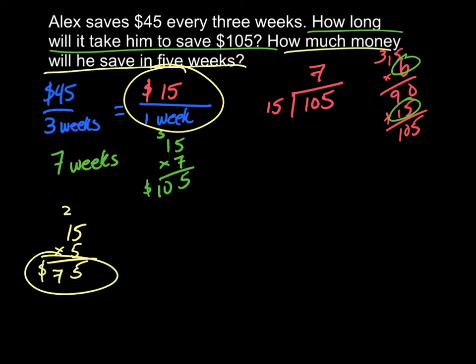And you notice I'm color coding it here. Once you find your unit rate, everything else should be a lot easier to go through.